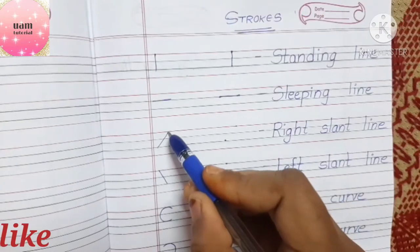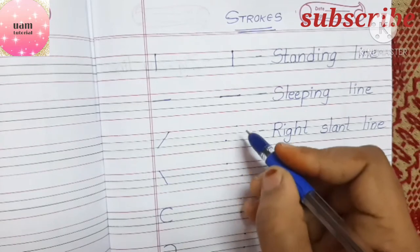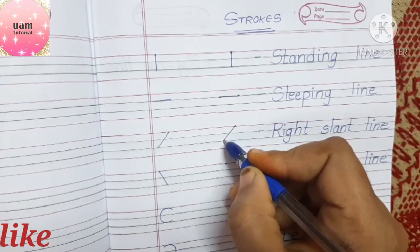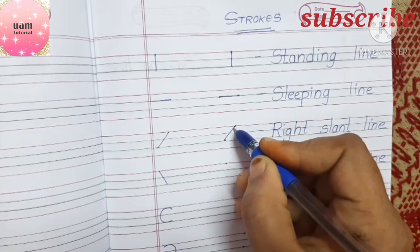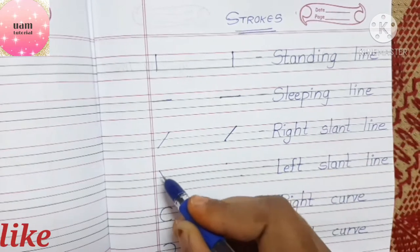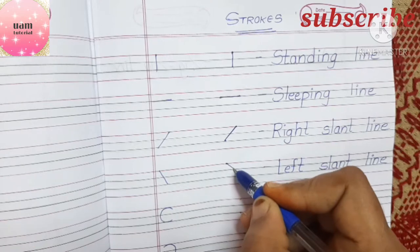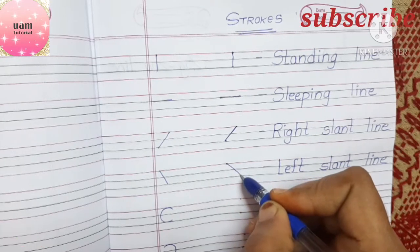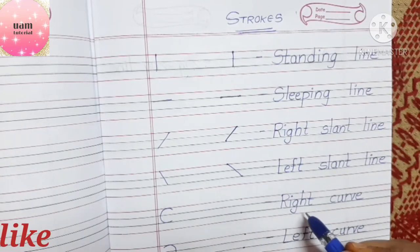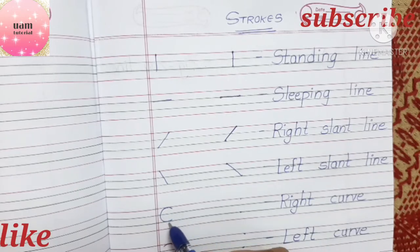The third stroke is the right slant line — written like this. This is your right slant line. And this is your left slant line — we are starting from the left, so it's a left slant line.